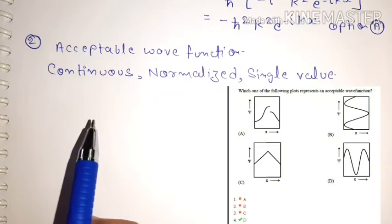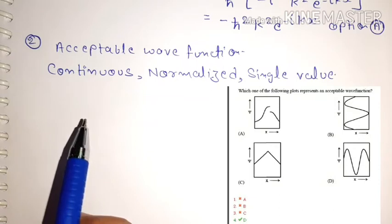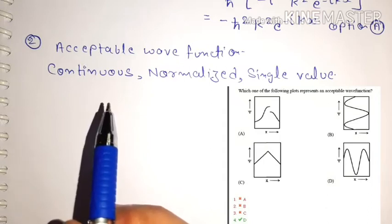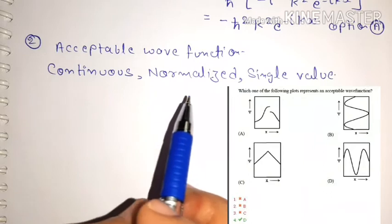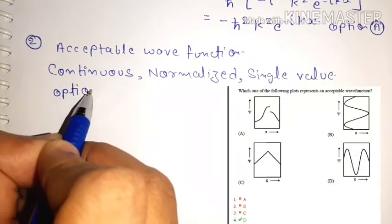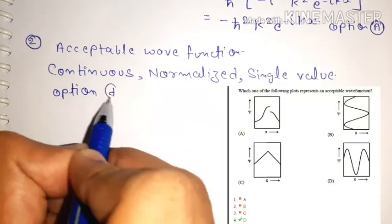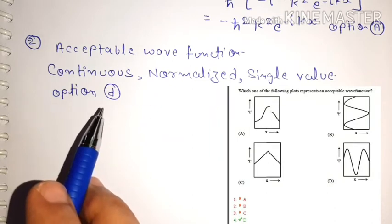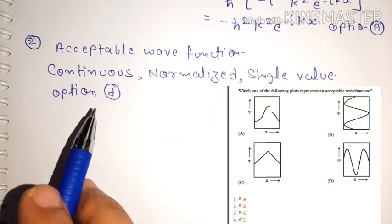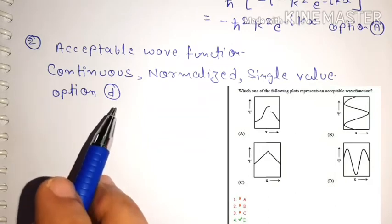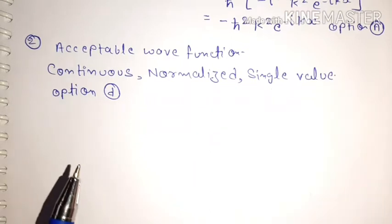Looking at option 1: it is not continuous — so not acceptable. Option 2: it is not single-valued — not acceptable. Option 3: also not single-valued — not acceptable. Only option D (option 4) is both continuous and single-valued, so option D is the correct answer. Simple question. Let's go to the next one.